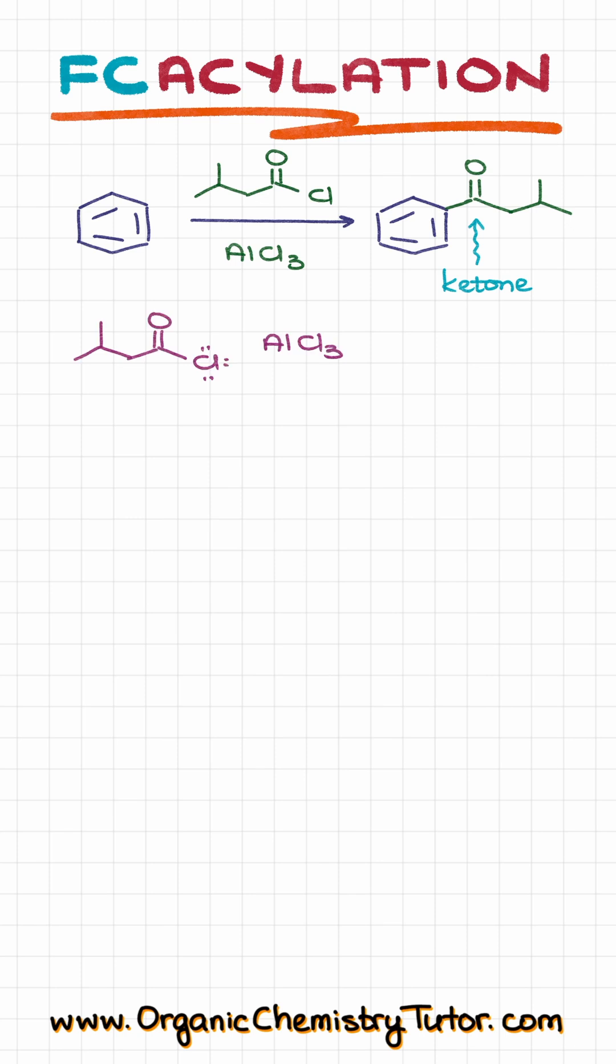Mechanistically speaking, we start by making a complex between our acyl chloride and aluminum chloride, which is a catalyst in this case. This complex will then drop off the chlorine and form the acylium cation, which is the electrophile in this reaction.